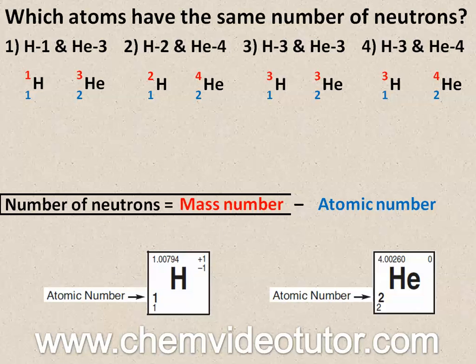To find the number of neutrons, subtract the atomic number from the mass number for each atom in the choice. Continue doing this until you find the choice that has the same number of neutrons, which will be choice 4.